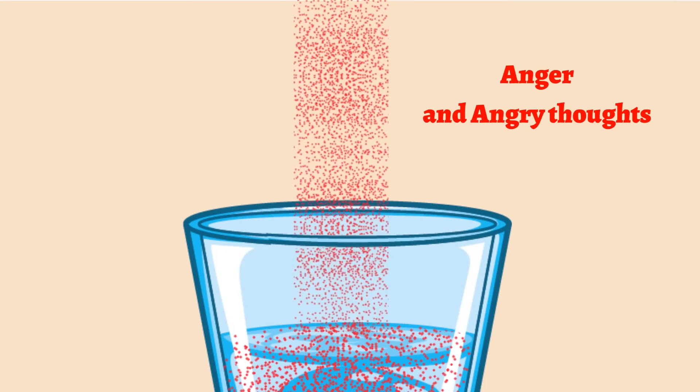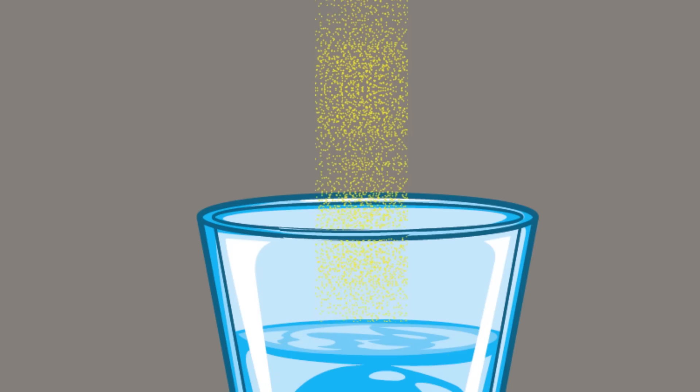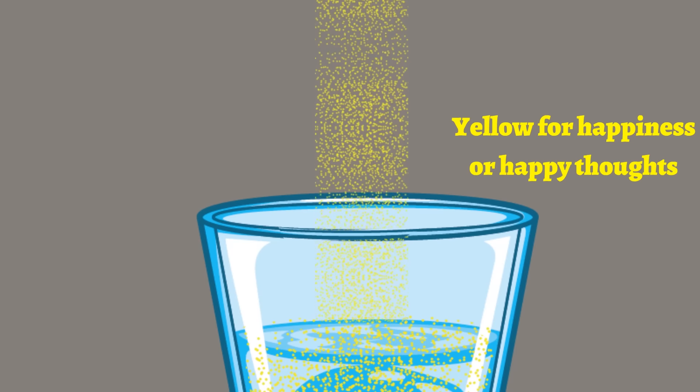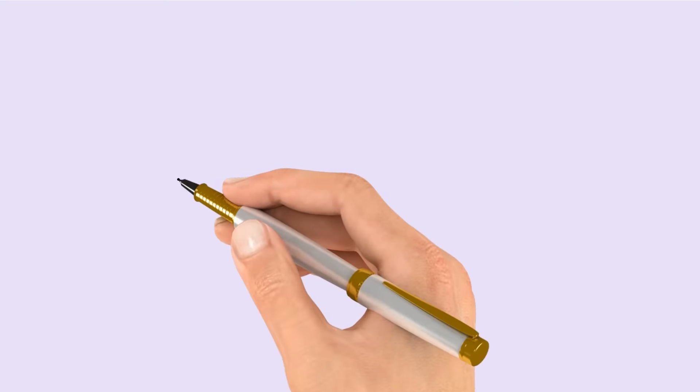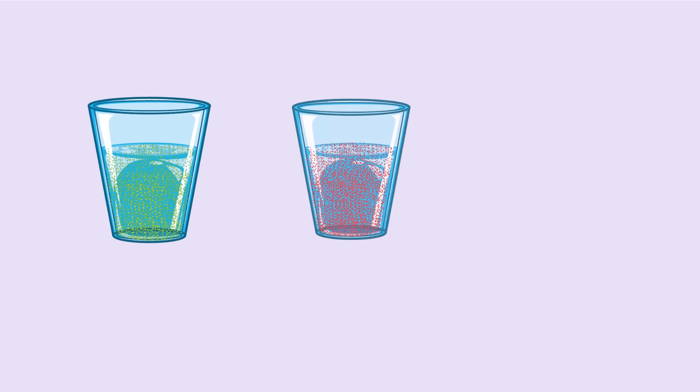Red can be anger and angry thoughts, yellow for happiness and happy thoughts, green for envy and envious thoughts. Pick the color for what you feel.